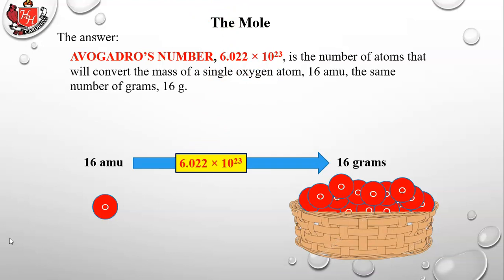That specific number, 6.022 × 10²³, converts 16 amu to 16 grams. For example, if scientists decided tomorrow to measure mass in pounds instead of grams, there would still be a single number to do that conversion, but it would be different from 6.022 × 10²³. The magic number to convert from the mass of a single oxygen atom to the mass of that same count of atoms — where both numbers are 16 — is 6.022 × 10²³. That's the magic number in chemistry.